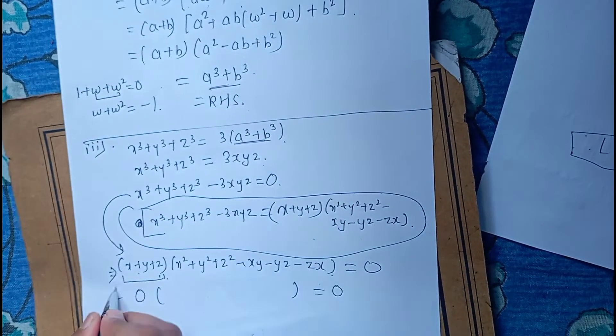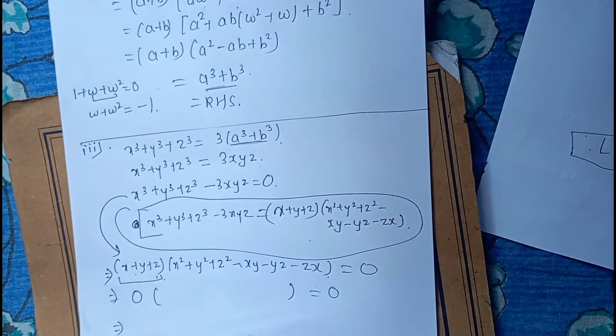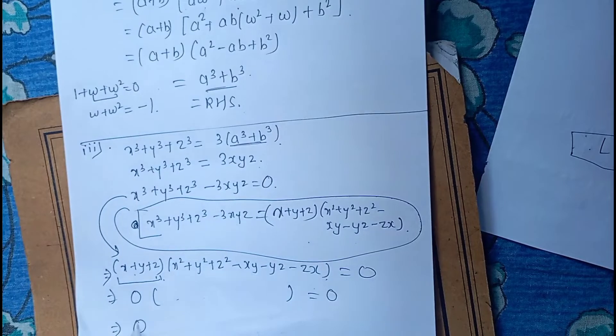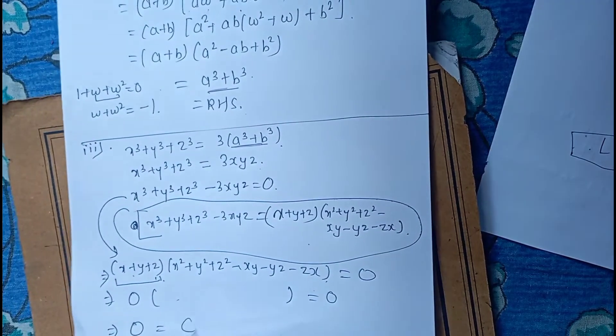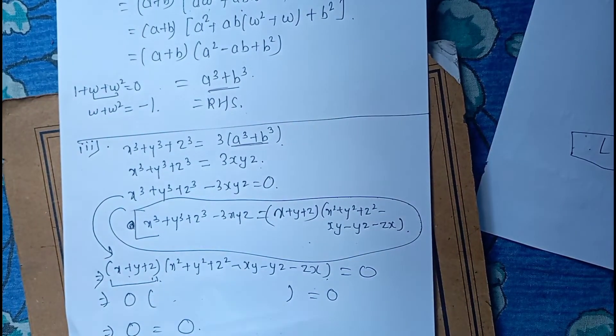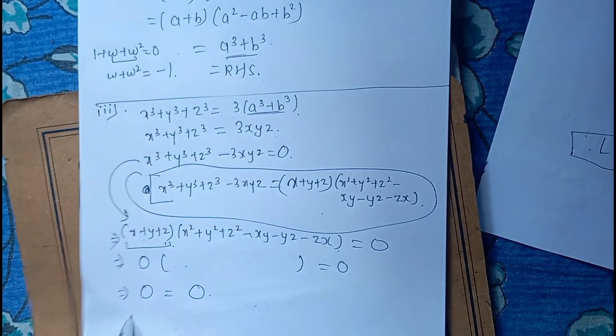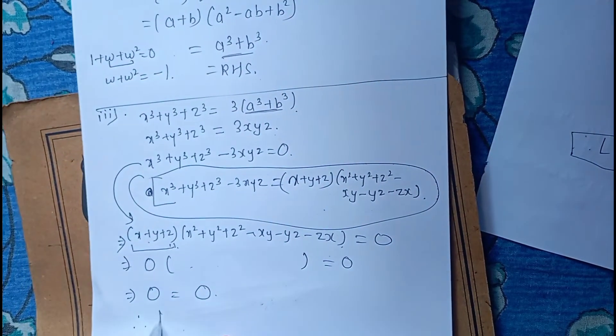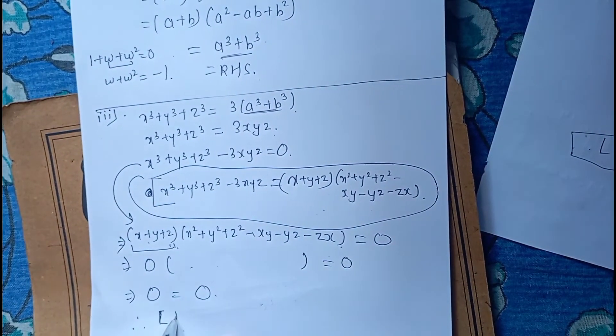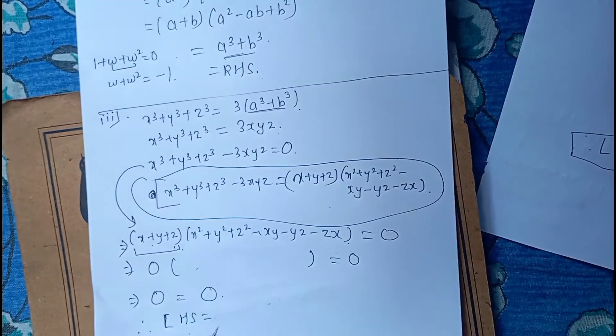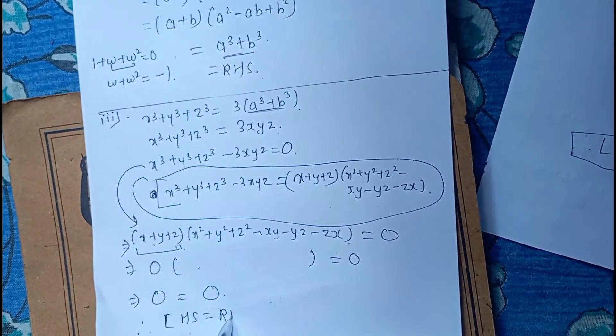Something is equal to 0. Zero into something is equal to 0. Therefore, LHS is equal to RHS.